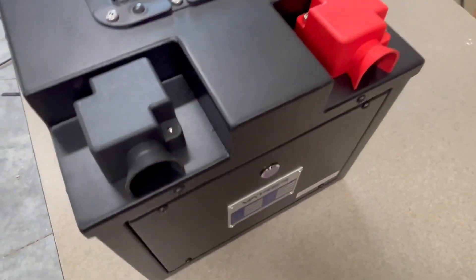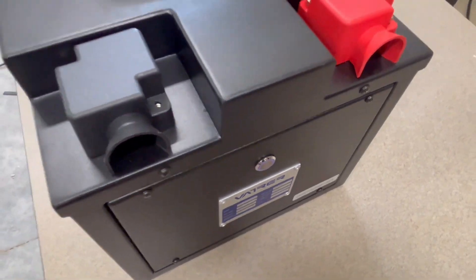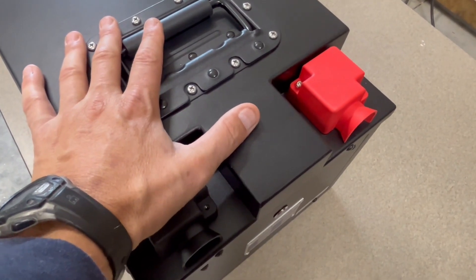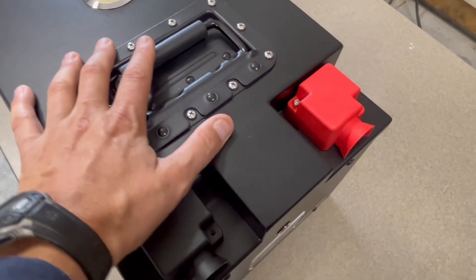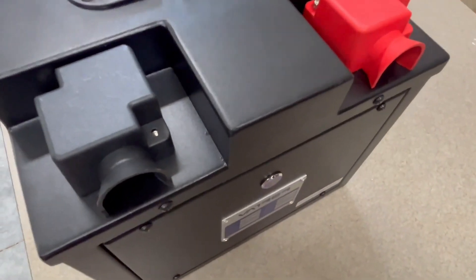Over here on the front they actually have a button for the BMS which is really cool. These batteries use a JBD BMS inside of them which I really like because they are durable and I can attest to that. I've used an Overkill BMS which is JBD essentially in my 48 volt packs.